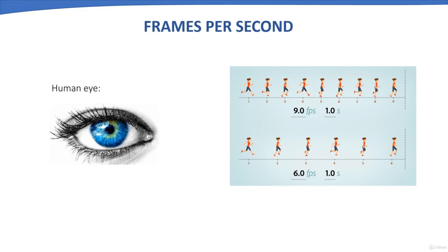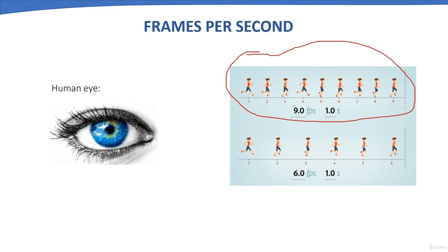Greater the FPS, smoother the video will appear. In one second there may be a total of 9 or 6 different frames captured. These frames are all different and are captured at microsecond intervals. When we move these images at a very fast rate, we see them as a video clip — which is an illusion of our eye. Actually we are seeing only the images, not a video.